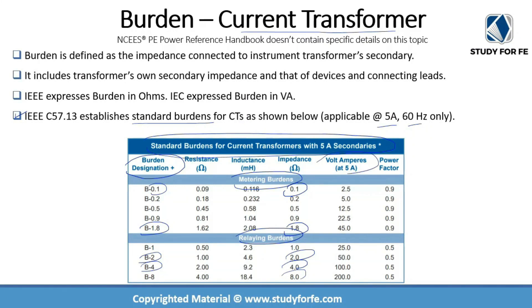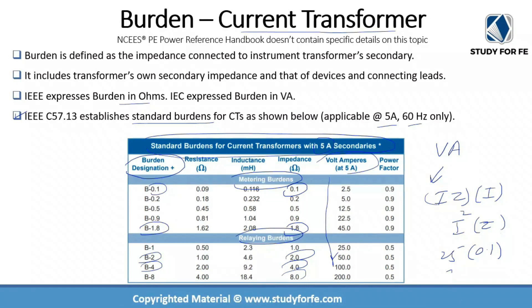IEEE expresses burden in ohms, but the table also shows volt-amperes. Volt-amperes is V·A, and since V equals I·Z, volt-amperes equals I²Z. So for a burden of 0.1 ohms, with I always equal to 5 amps, we get 5² × 0.1 = 25 × 0.1 = 2.5 VA. You can verify the remaining numbers using the same formula: VA = I²Z, substituting the appropriate impedance values.